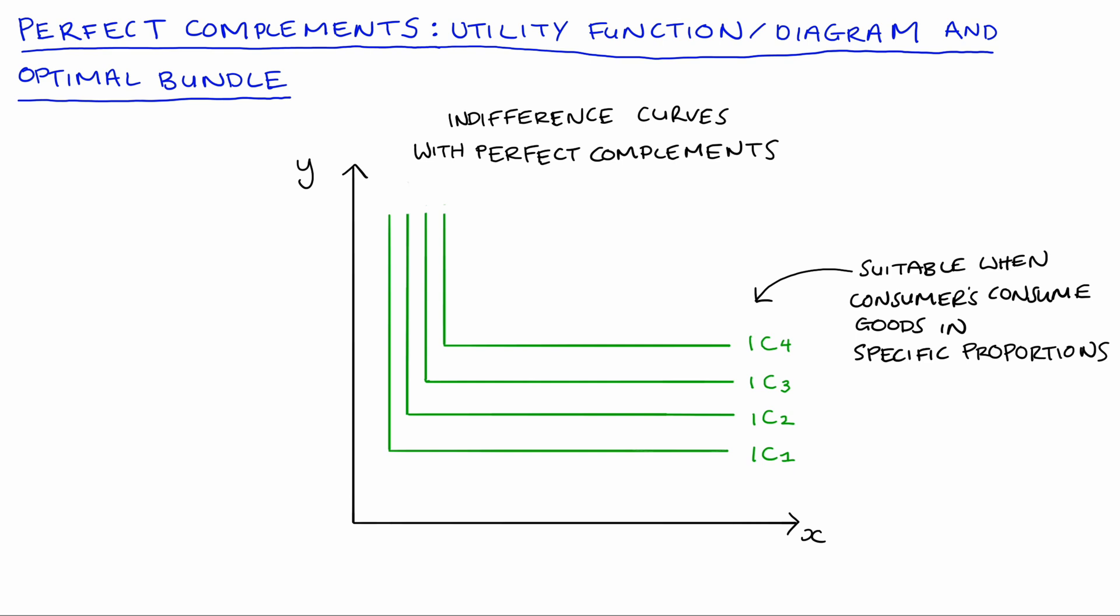So a very common example would be left shoes and right shoes. Typically consumers will consume left shoes and right shoes in a one-to-one ratio. It's a very specific ratio. For my diagram I'm just going to use an abstract good x on the horizontal and y on the vertical. And I'll put some numbers in on our axes and we'll see in a minute but I've drawn these indifference curves so we're not consuming x and y in a one-to-one ratio like the shoes. Actually we would interpret these curves as follows.